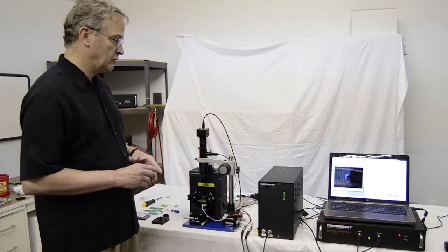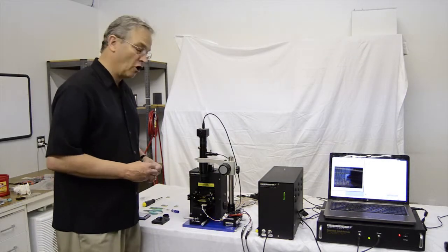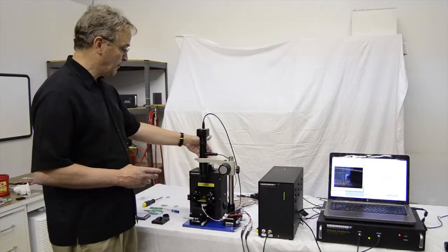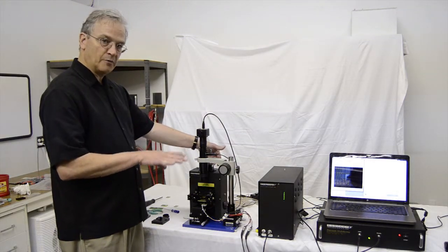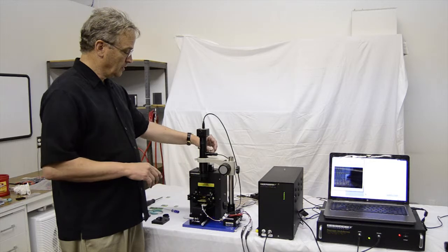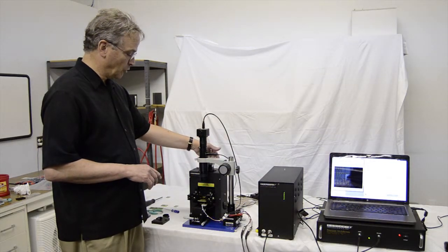At this point, we can turn the rest of the operation over to the software. We'll start the automated tip approach. When that happens, the e-box will lower the light stage in steps using the stepper motor.